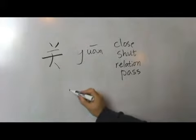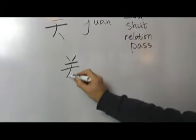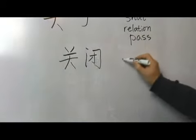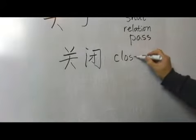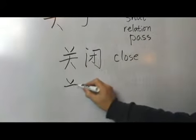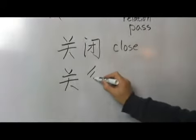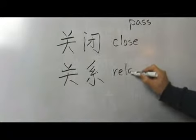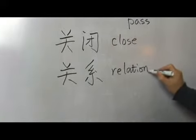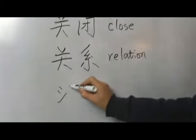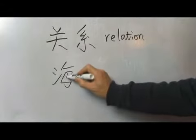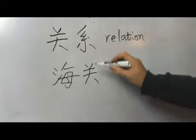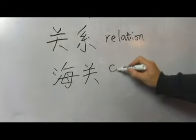So 关, like 关闭 (guān-bì) — that's close or shut. And 关系 (guān-xì), that's a relation or relationship. And then 海关 (hǎi guān) — here the 关 means pass, so it's the customs.